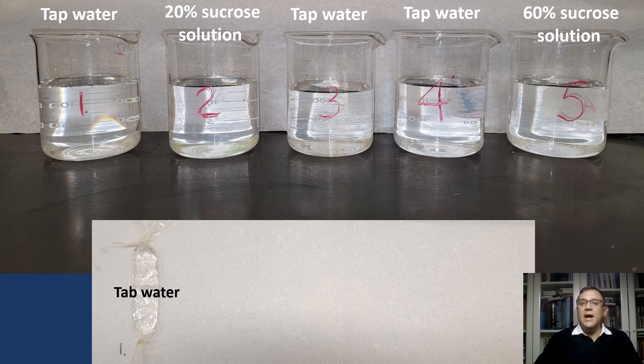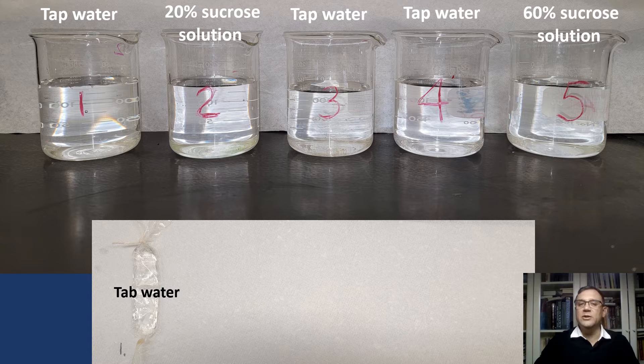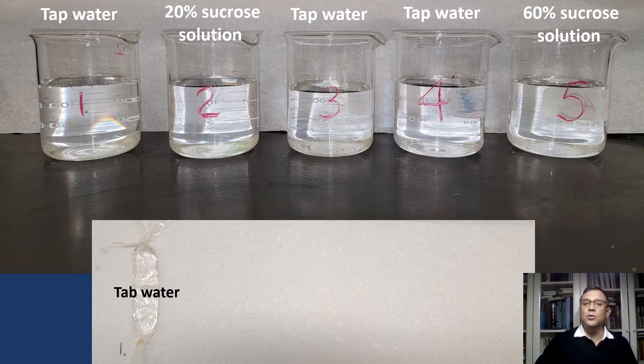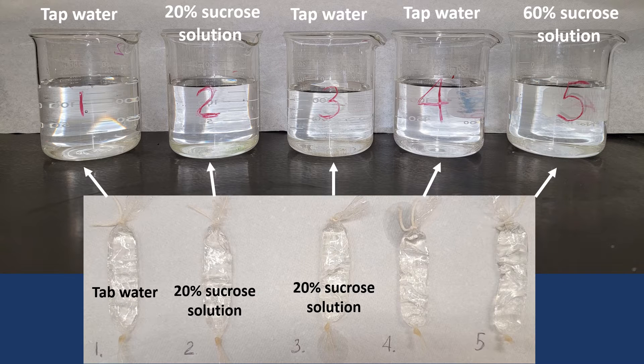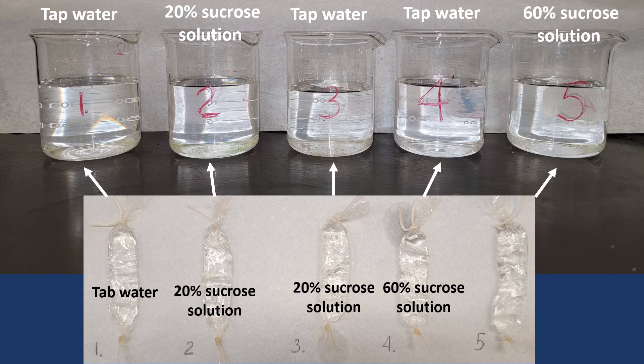So we have made our first dialysis bag filled with water. In the next two bags, we will add a 10 ml sample of 20% sucrose solution. We will place the bags on a paper towel next to our beakers. In the fourth bag, we will add 60% sucrose solution. And in the last one, we will add tap water.